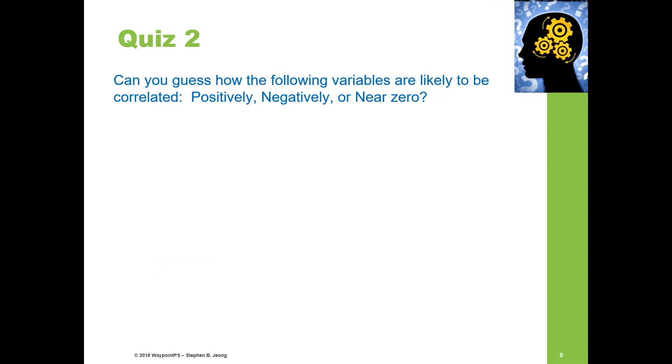Let's do a quick review. Quiz number two. Can you guess how the following variables are likely to be correlated—positive, negative, or near zero? You don't have to worry about the magnitude or intensity. Education and income: we would expect that as one's education increases, income level also increases. Height and intelligence: are taller people more intelligent? Probably not. We would expect a zero correlation here or near zero.